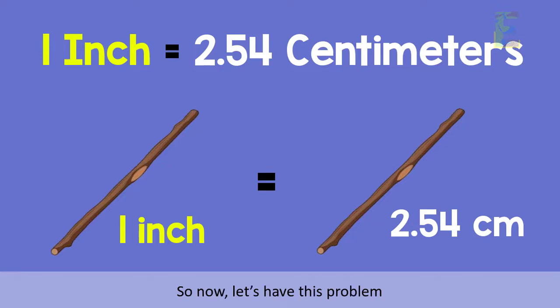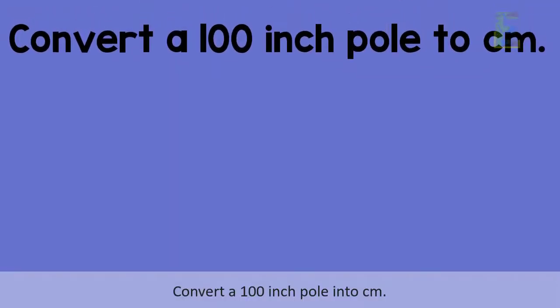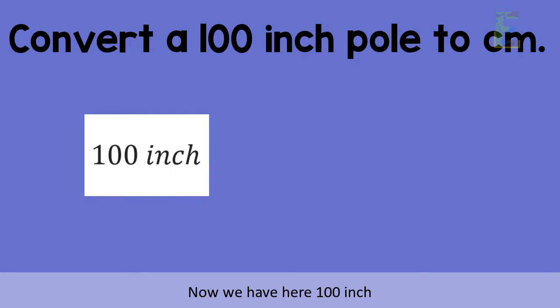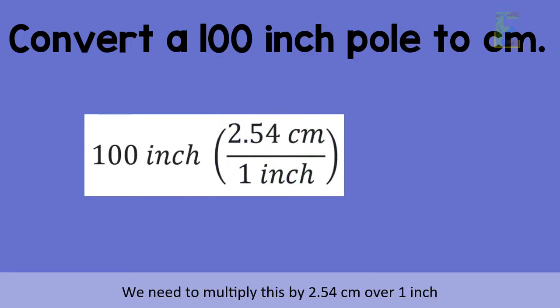So now let's have this problem. Convert a 100 inch pole into centimeters. Now we have here 100 inch. We need to multiply this with 2.54 centimeters over 1 inch to cancel out the inch.